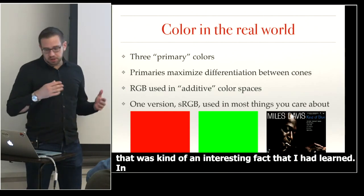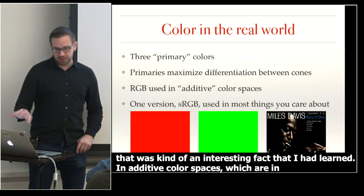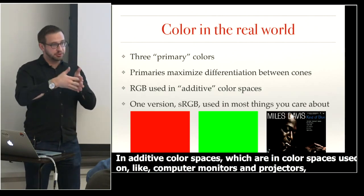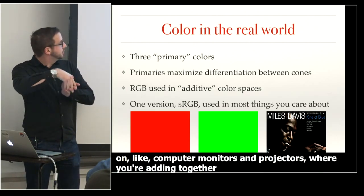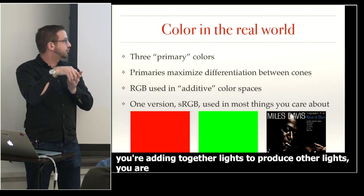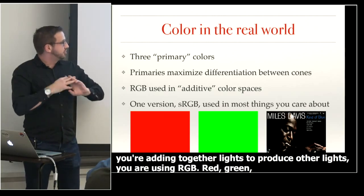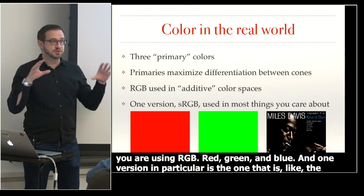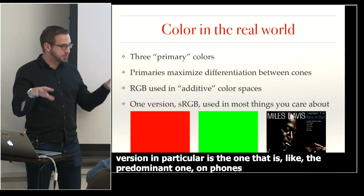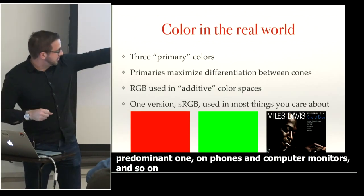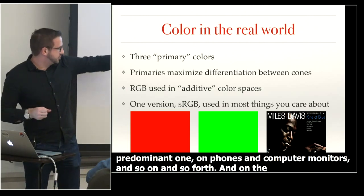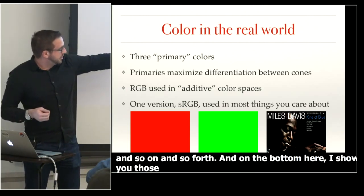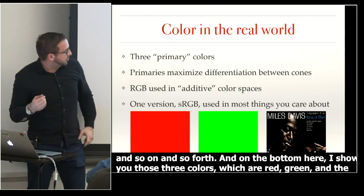In additive color spaces — used on computer monitors and projectors, where you're adding lights together to produce other lights — you use RGB: red, green, blue. One version in particular is the predominant one on phones, computer monitors, and so on. The three primaries are red, green, and the landmark Miles Davis album, Kind of Blue.